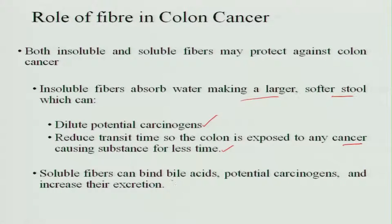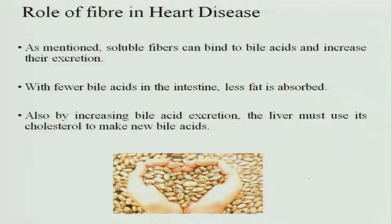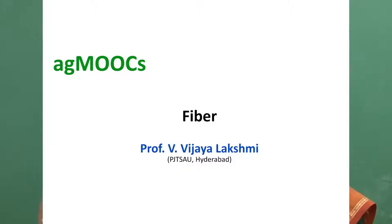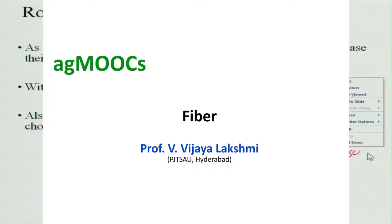Soluble fiber binds bile acids and potential carcinogens, helping in their excretion from the large intestine. Fiber also plays an important role in preventing heart disease: soluble fibers bind bile acids and increase their excretion along with cholesterol, preventing a condition called atherosclerosis — where fat accumulates in the walls of blood vessels. With fewer bile acids in the intestine, fat is less absorbed, and by increasing bile acid secretion, the liver is prompted to remove more cholesterol.